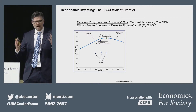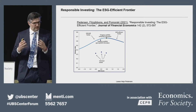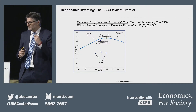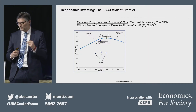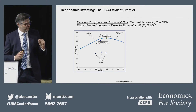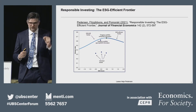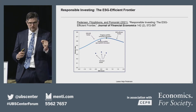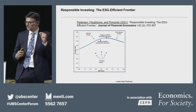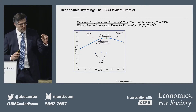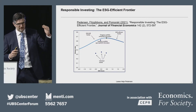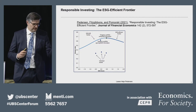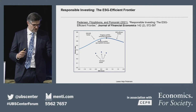Economists like to put things in a two-dimensional plot, and now we have three things. So we use the insight from finance that risk and return can be summarized in one number, namely the Sharpe Ratio. Now we're down to two things: the Sharpe Ratio — capturing the expected return divided by the risk — and how green the investment is, the ESG score.